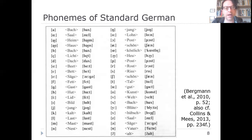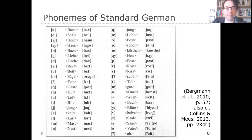Continuing the German phoneme inventory: /ɡ/ as in Gast, /h/ as in Hut, /iː/ as in Lied — note the transcription — /ɪ/ as in Bild, /j/ as in Jung, /k/ as in Kalt, /l/ as in Last, /m/ as in Muss, /n/ as in Nest, /ŋ/ as in Jung — that's hard to pronounce in isolation. Then /oː/ as in Lohn, /ɔ/ as in Post, /øː/ as in Schön — a rounded front vowel that doesn't exist in English — and /œ/ as in Köstlich.